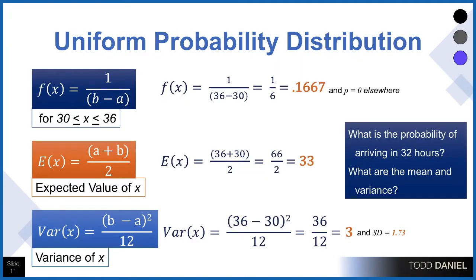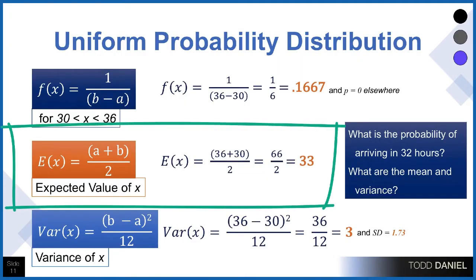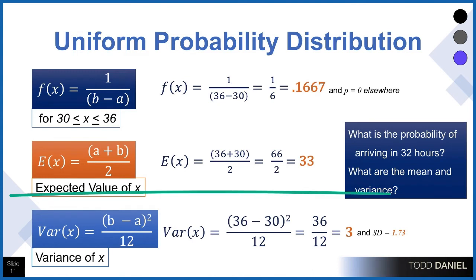The mean, or the expected value, would be add the two extremes together. So 36 plus 30 divided by 2. The average is 33, which is right in the middle of our distribution between 30 and 36. And the variance would be b minus a squared divided by 12. In this case, it's 36 over 12, or 3. You can take the square root of that value, that variance value, and get a standard deviation.